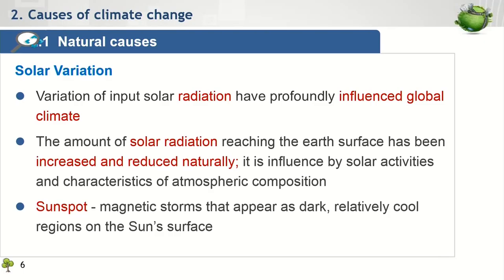In addition, sunspot activity, which is the magnetic storm event that appears as a dark and cool region on the sun's surface, can also influence the earth's climate by reducing the amount of sunlight. These sunspot phenomena vary in an 11-year cycle. Typically, during years that have many sunspots, the amount of solar radiation is less intense. So the earth receives less radiation compared to normal years. Therefore, during that particular year, we are likely to expect a relatively cooler climate.